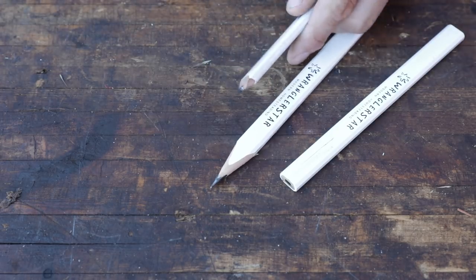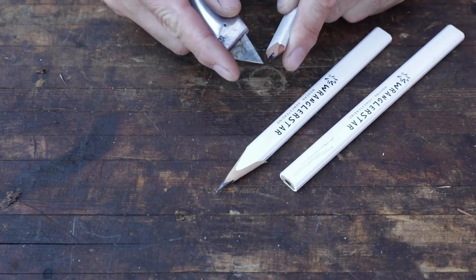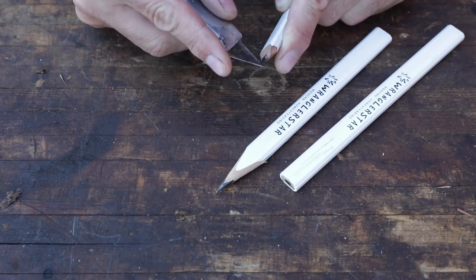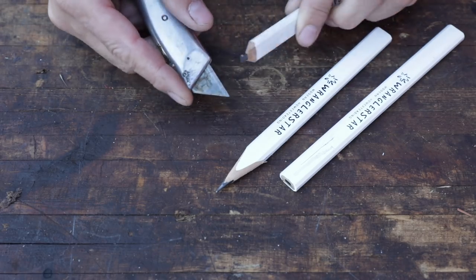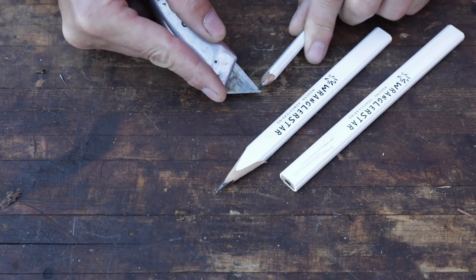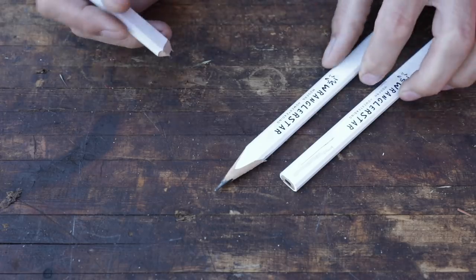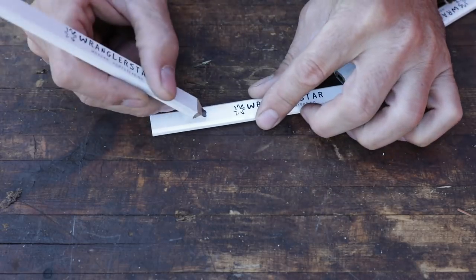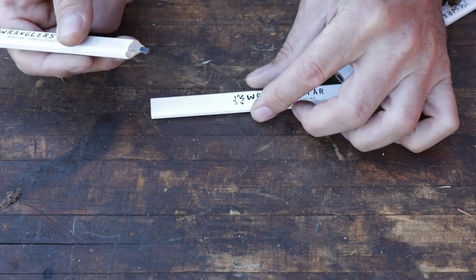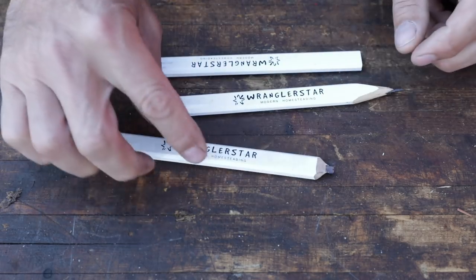I've even read in a couple places that some guys back in the day would take a small file, and cut a V groove in the end of the graphite like this here. We'll try it together. And in so doing, be able to draw a double line, which indeed it does. I don't know when you would use an application like that. That seems a bit farfetched to me.